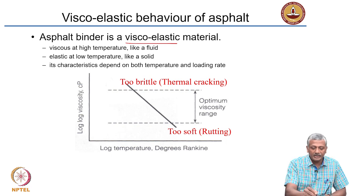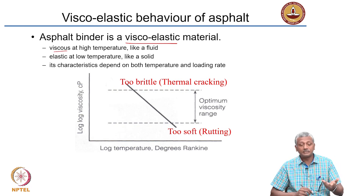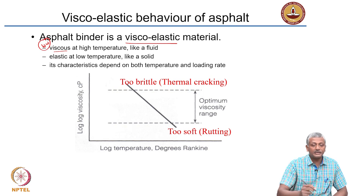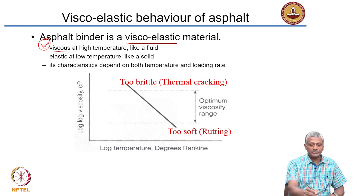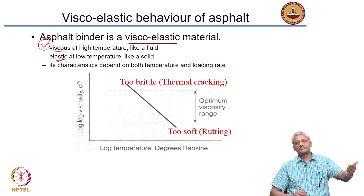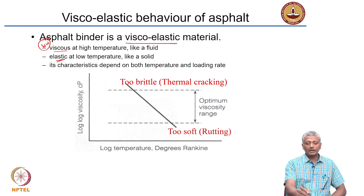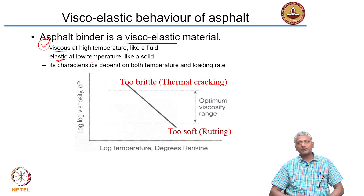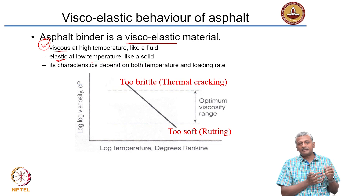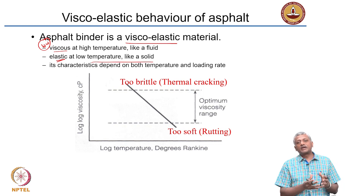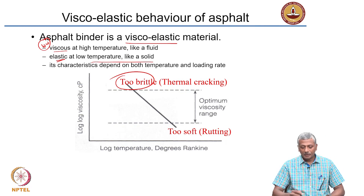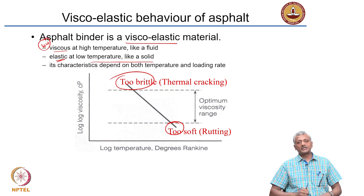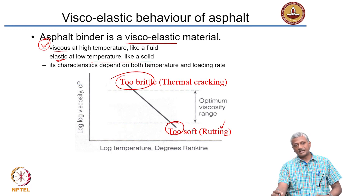Asphalt has low viscosity at high temperature and behaves like a fluid — it flows easily. When you reduce the temperature, it becomes elastic and behaves like a solid. At very low temperatures, polymers can become very brittle. When the temperature is very low, you can get thermal cracking; when the temperature is very high, the polymer will start flowing, leading to problems like rutting in asphalt pavements.